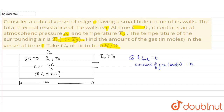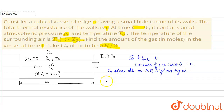Suppose an amount δQ of heat is given to the gas in time dt. The increase in temperature of the gas will be dT. So δQ will be n·Cp·dT. We have taken Cp because the pressure is constant, which is atmospheric pressure. So δQ = n·Cp·dT.